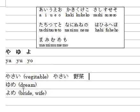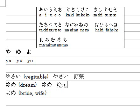The next word is ゆめ. ゆめ means dream. You need to type Y-U-M-E. ゆめ. For the kanji, ゆめ is this one. はい。